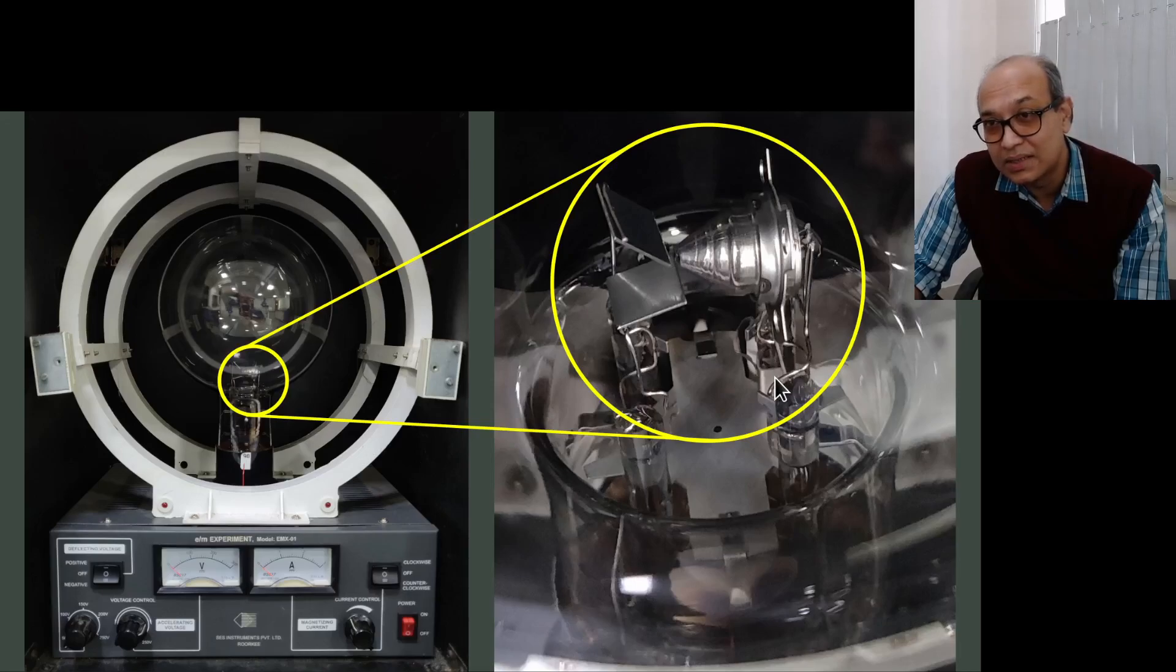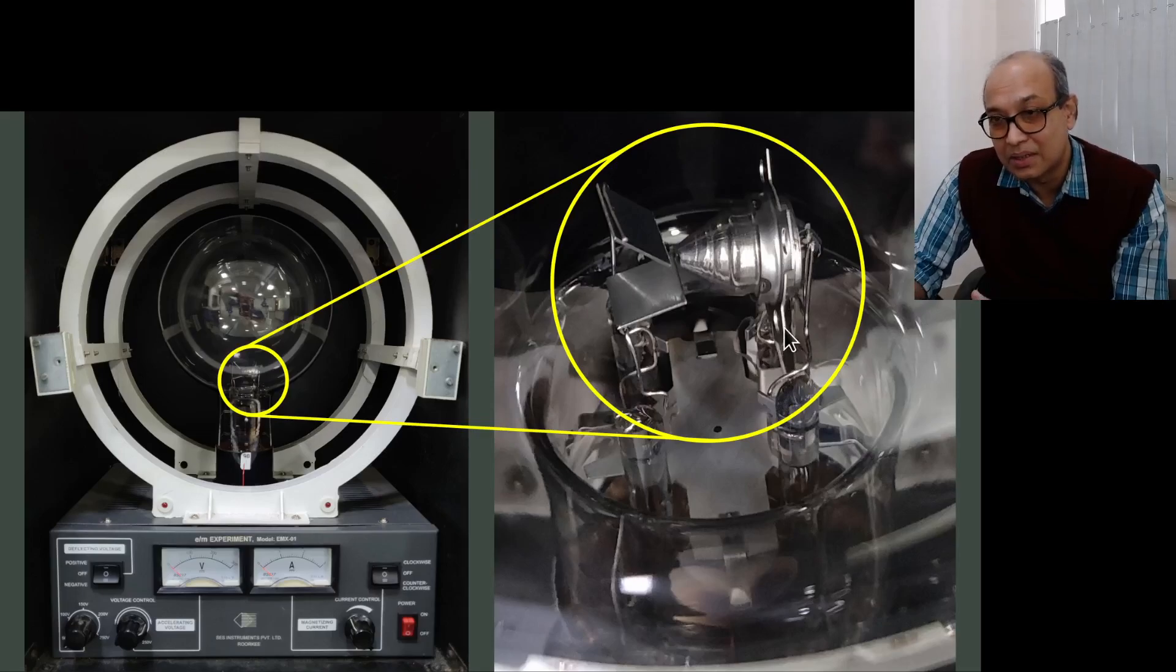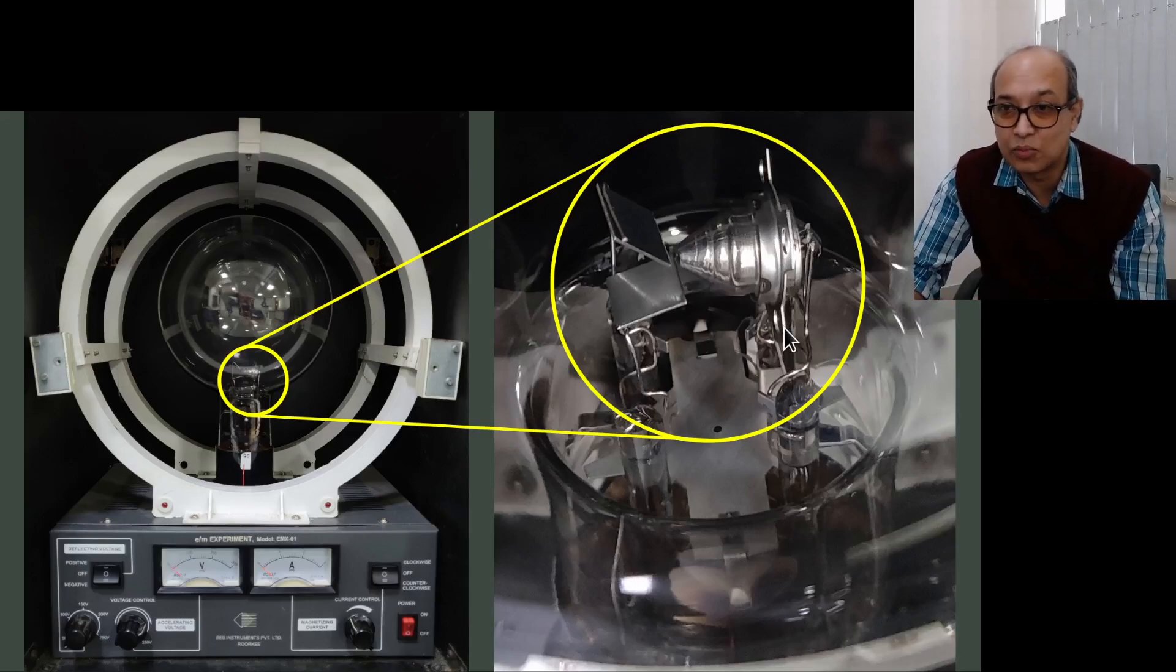And we have this cathode side and these wires. Some of the wires are the heating cables. They heat up the cathode to aid the thermionic emission.